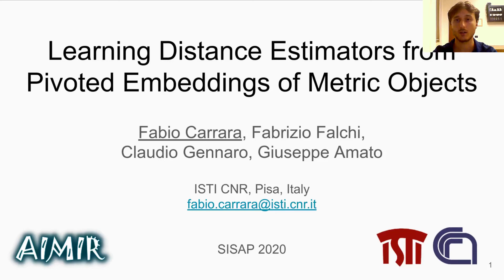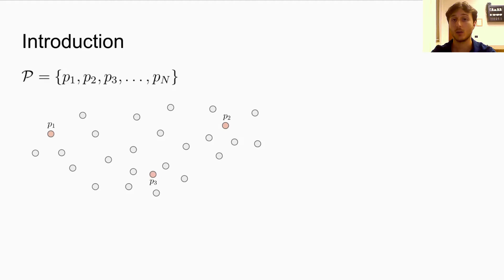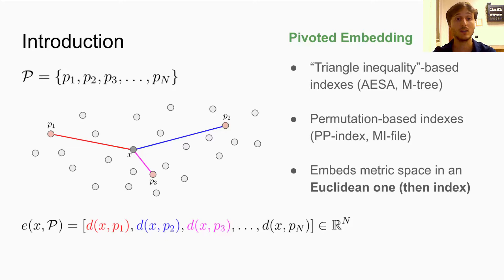Pivots, or reference points, are widely adopted when building indexes for metric spaces. Generally, once a set of pivots is chosen, the distances between an object and all the pivots form a real-valued vector that we call pivoted embedding in this work. And this pivoted embedding can be used in multiple ways.